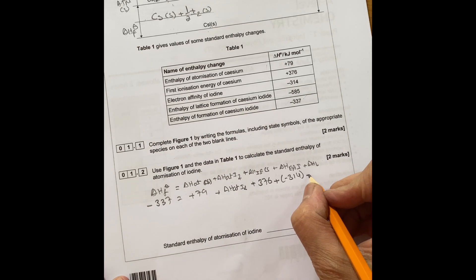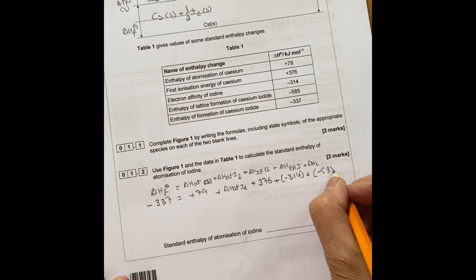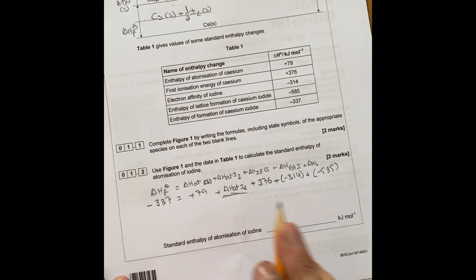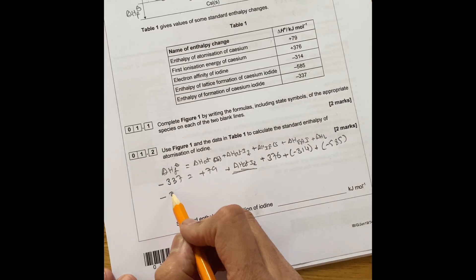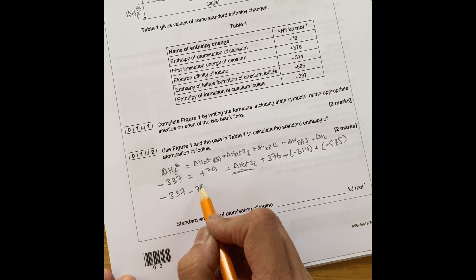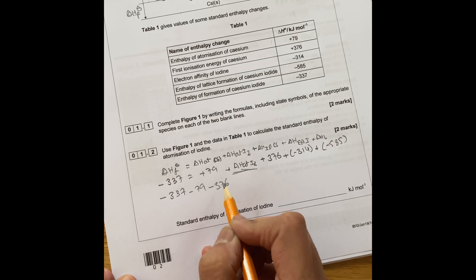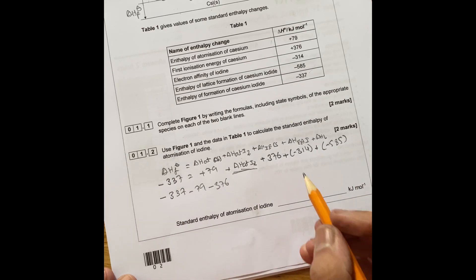You rearrange all that to find that. So what you do, you put minus 337 minus 79 minus 376. What you're doing, you're passing everything through to the other side.